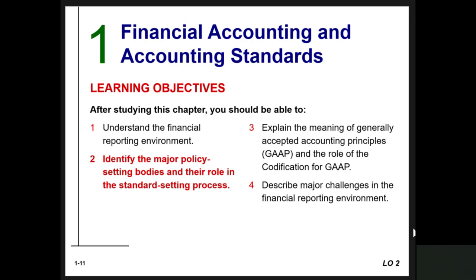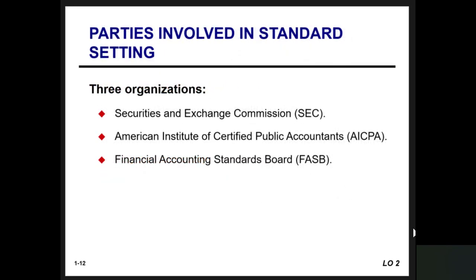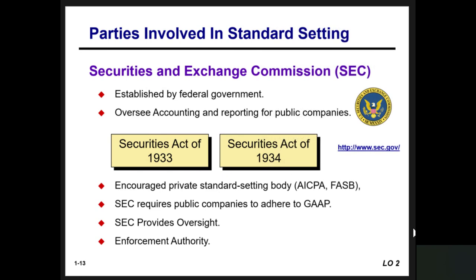Learning objective 2: identify the major policy setting bodies and their roles in the standard setting process. There are three organizations involved: the Securities and Exchange Commission, the American Institute of Certified Public Accountants (AICPA), and the Financial Accounting Standards Board (FASB). The SEC derives authority from the Securities Act of 1933 and 1934, and was established by the federal government to oversee accounting and reporting for public companies. The SEC has typically encouraged private standard setting by bodies such as the AICPA and FASB, provides oversight and enforcement authority, and requires public companies to adhere to GAAP.